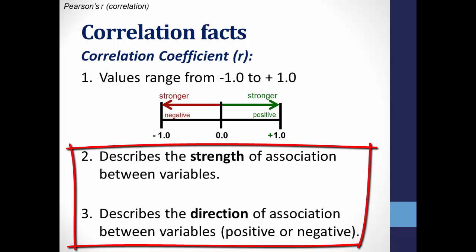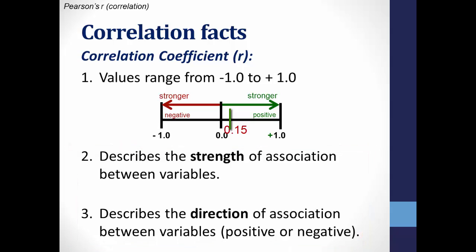But it's important to pay attention to both number 2 and 3 here. A Pearson's R of 0.15 would indicate a very weak positive correlation. While if you calculate a Pearson's R at negative 0.55, that means it's a stronger correlation, but in the negative direction.